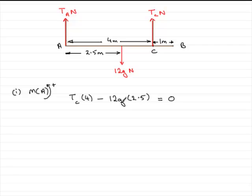So all that's left to do is just to rearrange this equation and work out Tc. So if you work this out, what we've got is 4 Tc here equals, and if you work out, well we'll just add 12g times 2.5 to the other side. And then if I divide both sides by 4, you're going to get Tc equals, where you could cancel 4 into 12 and get 3g times 2.5.